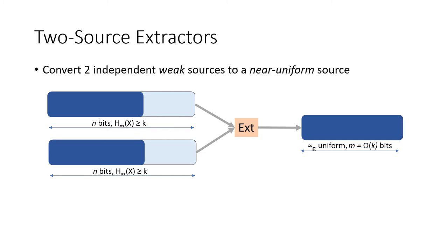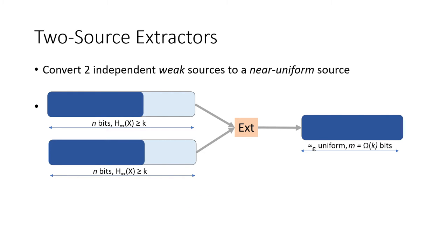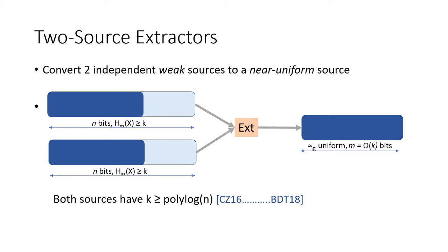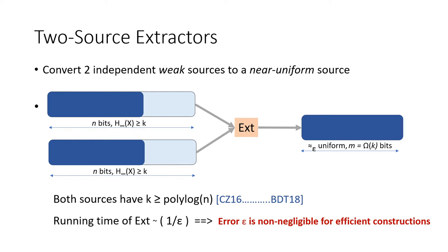They also don't necessarily need to be the same size or have the same amount of entropy; the assumption is just that they should be independent. A two-source extractor is a deterministic algorithm that, given such independent sources with sufficient entropy, outputs a distribution that is close to uniformly random. For a long time, we only knew how to extract randomness in this setting when at least one of the sources had min-entropy about half of n.